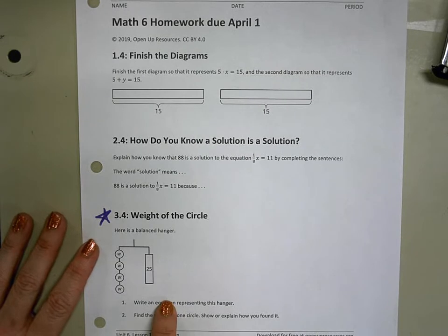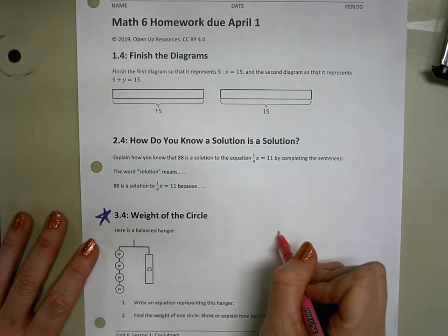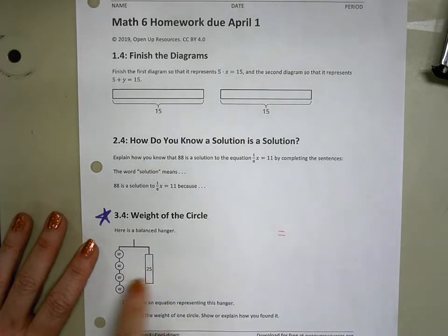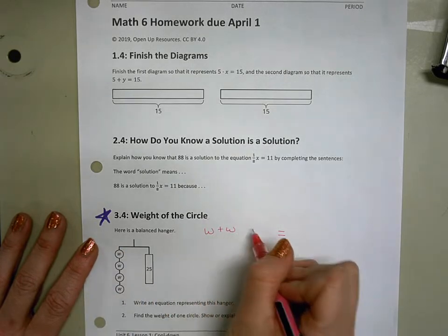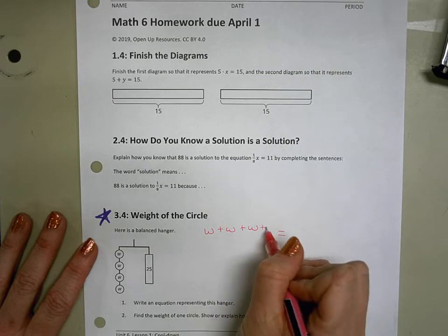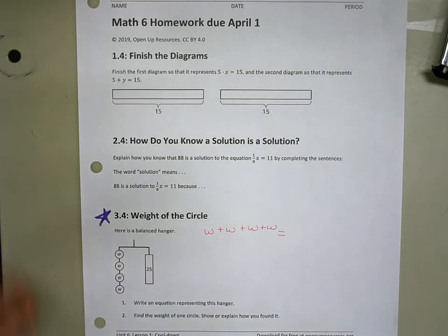Here is a balanced hanger. We're going to start by writing the equation for the hanger. So one way to write the equation is to write the two sides as we see them right now. And what I see is that I have W plus W plus W plus W on one side, and then 25 on the other.